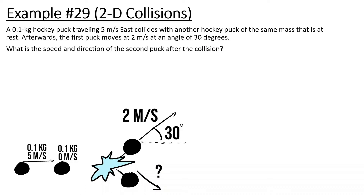Hey everybody, welcome to the last video for this chapter on Momentum and Impulse. We're going to be talking about 2D collisions that are not perfectly inelastic. We have a 0.1 kg hockey puck traveling 5 m/s east, colliding with another hockey puck with the same mass that is at rest.